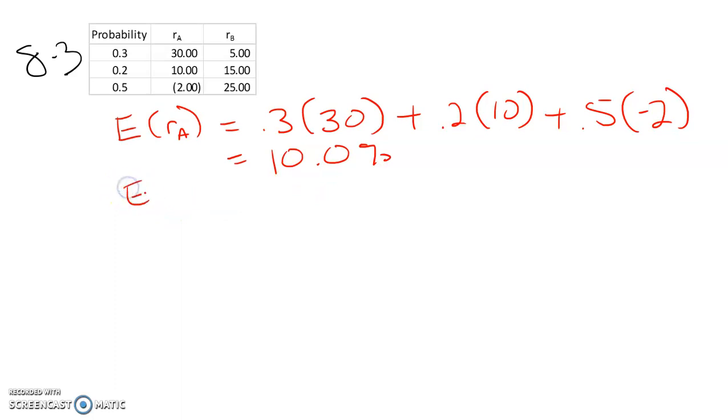Expected return for B is 0.3 times 5, plus 0.2 times 15, plus 0.5 times 25. So that's 17%.